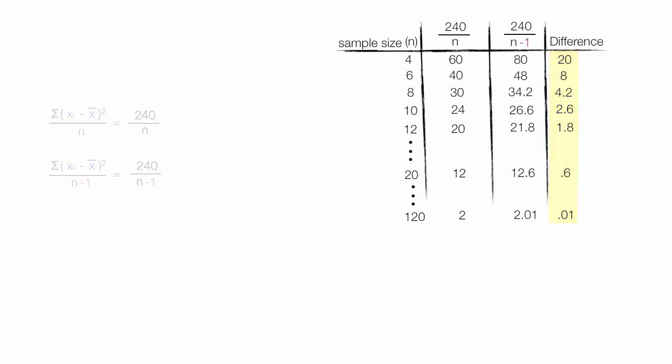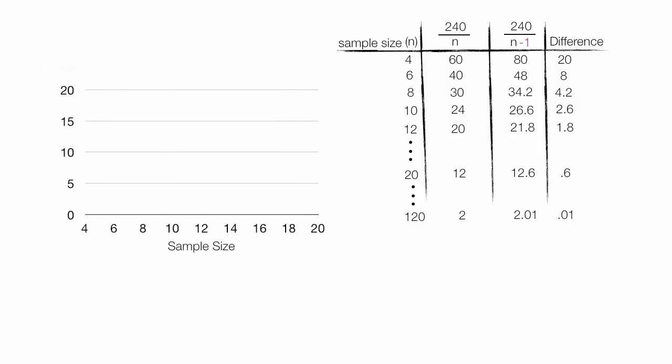Let me graph this for you now. Along the horizontal axis is sample size, and along the vertical axis is difference. And what I've graphed is the difference for sample sizes from 4 to 20. At small sample sizes, there's a big difference, and at large sample sizes, there's a very small difference. So this n-1 adjustment makes a big difference at small sample sizes, and less of a difference as the sample size grows.